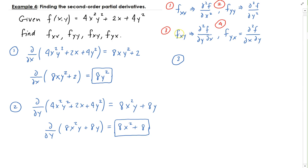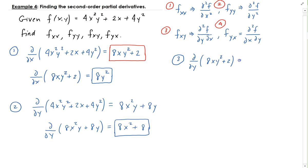Now for the mixed partials, the order is important. For number three, we take the partial of f with respect to x first, then take the partial of that with respect to y. We already have the partial of f with respect to x, which is 8xy² + 2. Taking the partial of that with respect to y, treating x as a constant, the derivative of y² gives us 16xy, and the derivative of 2 with respect to y is zero.